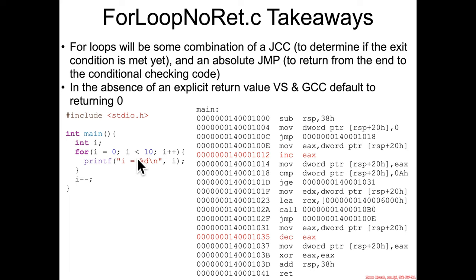A for loop with a conditional check inside it is probably going to turn into some sort of conditional check in the assembly. As usual, that conditional check will be greater than, above, and so forth based on the sign of the variables under operation. Since i is a signed int, it is using a signed greater-than check.